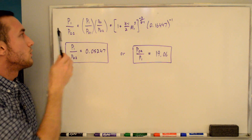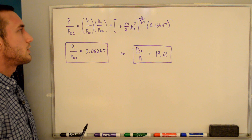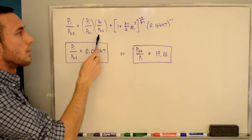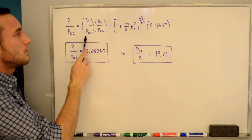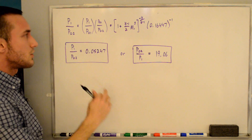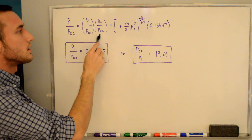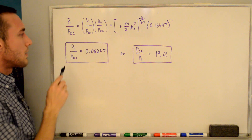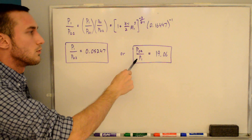The last term is p1/p02. We break it up into two known ratios: (p1/p01) × (p01/p02). The p01 terms cancel to give the desired result. The first factor is the isentropic stagnation-to-static ratio flipped, with a negative exponent. The second factor is the stagnation pressure ratio from the previous whiteboard, also taken to the negative one because it is flipped. Plugging in M1 and gamma gives p1/p02 = 0.05247, or equivalently p02/p1 = 19.06.